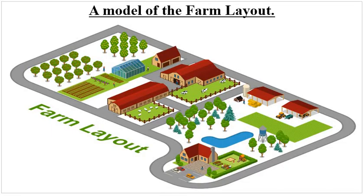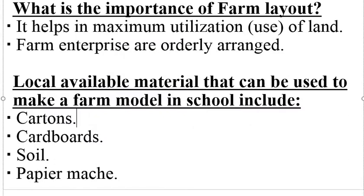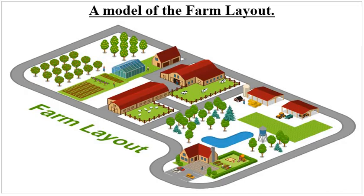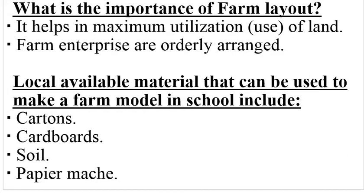Locally available materials we can use include things like carton boxes and cardboards — those can help us make a very good farm layout. Things like soil can also be used; you can see in the model the brownish part which implies a cultivated area. You also need things like papier-mâché — you take newspapers, divide them into small pieces, mix them with glue and stir them so they form a heavy liquid substance which can be moulded into shapes.